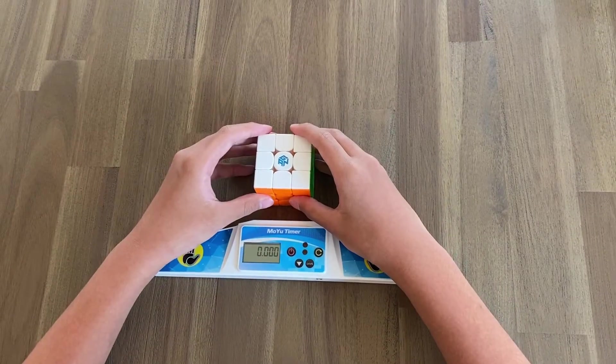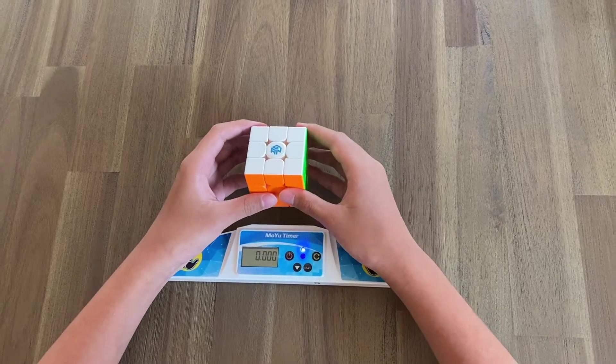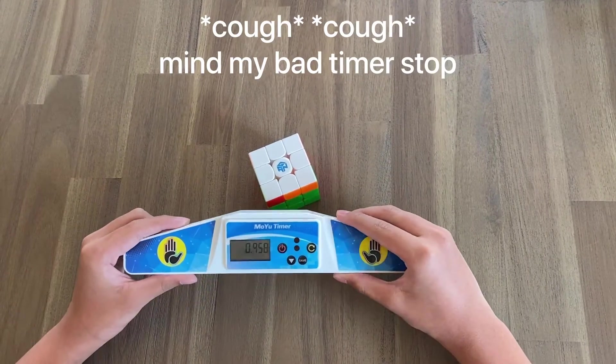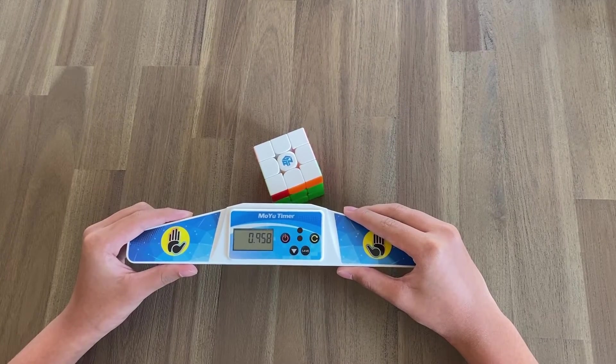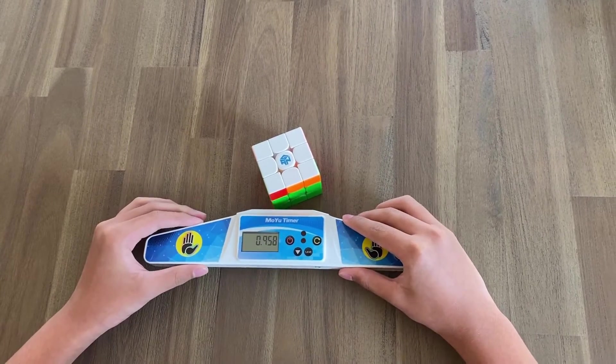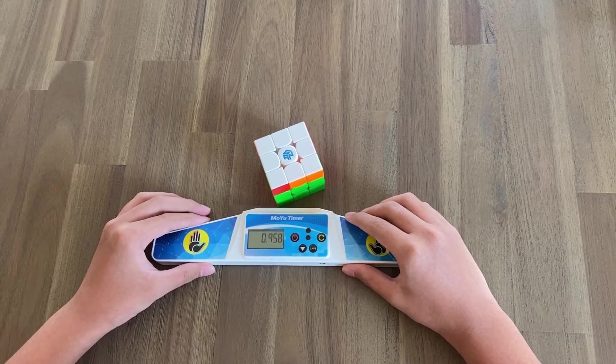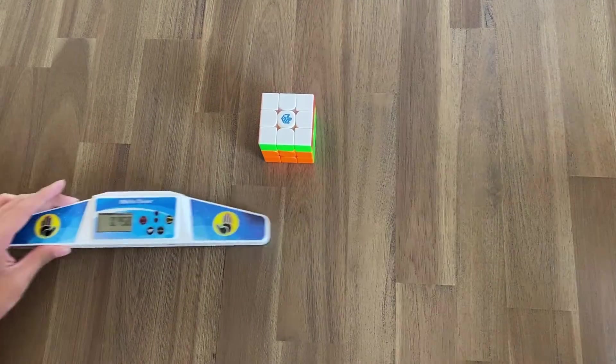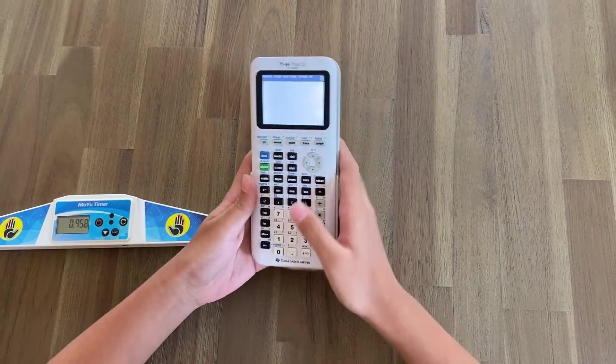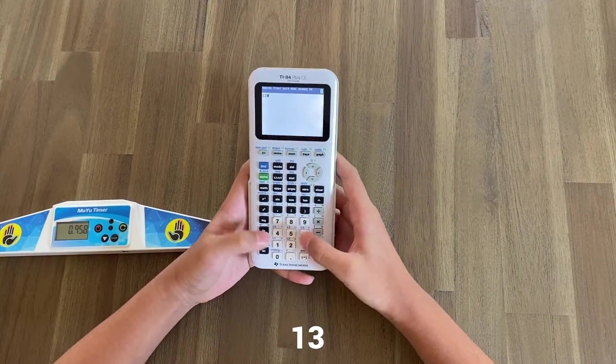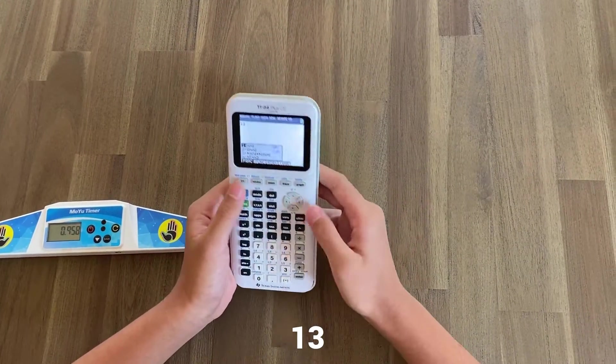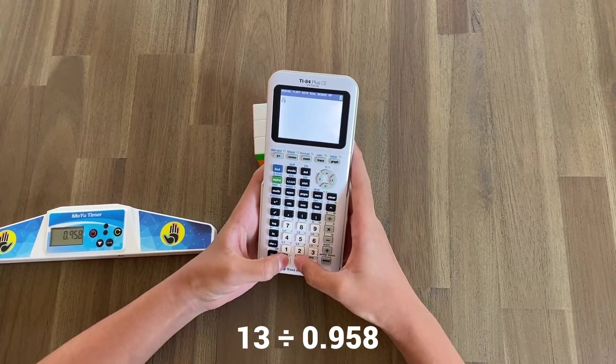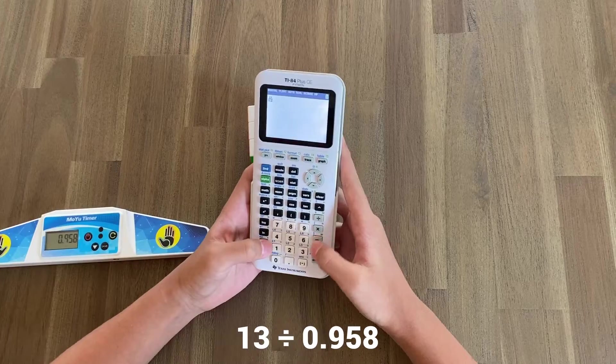So let's choose an algorithm, and in this case, we're going to do a J-perm because it's fast. And so the time we got is 0.958. What we can do is divide that by the total number of moves in a J-perm, which is 13 moves. So what we can do is take the turns, so that'd be 13, and we can divide that by our time, which is 0.958.